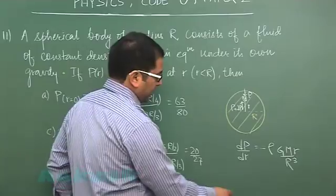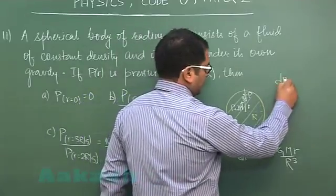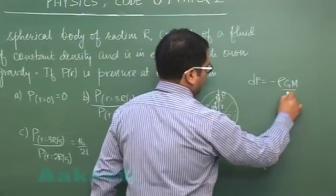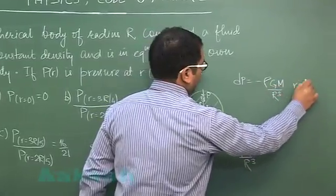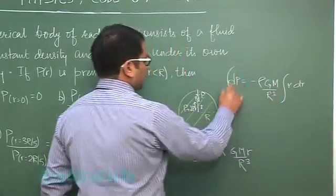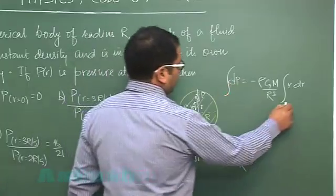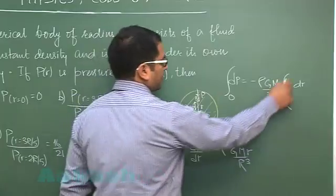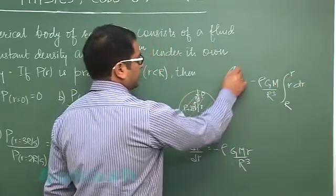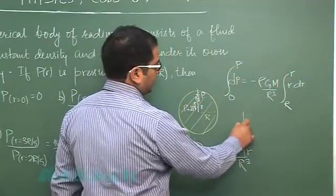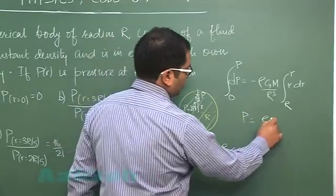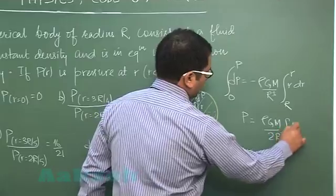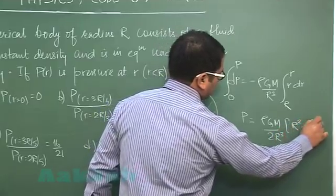Now I will be getting DP equals to minus rho Gm by R cube into R dr and at small r equals to capital R at the highest point the pressure would be 0. And at small r equals to this the pressure is P. This would give us P equals to rho Gm by 2 R cube into R square minus this much.